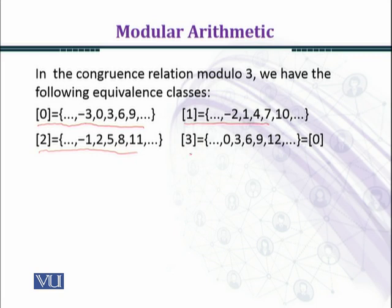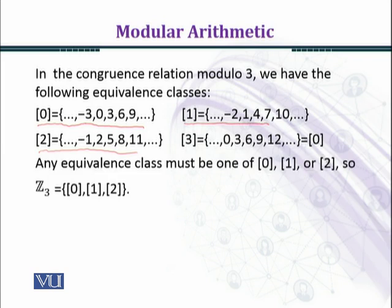And you can see that class 3 equal to class 0. In class 3, you shall get multiples of 3 and it would be equal to 0 class. We shall get only 3 classes, z3 equal to 0 class, 1 class, 2 class.